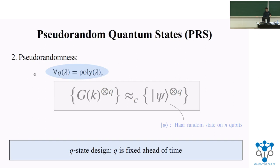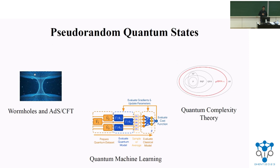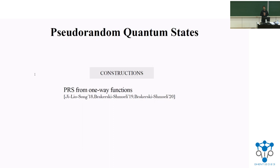Pseudorandom quantum states are really useful in many areas. For example, there's work showing the connection of pseudorandom quantum states with Susskind's wormhole growth paradox and the ADS-CFT correspondence. It is also used to show space complexity lower bounds in quantum machine learning and is of interest for quantum complexity theorists. It was shown in 2018 that you can construct this object from one-way functions, and this construction was subsequently improved.